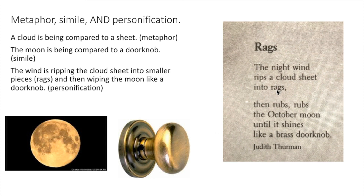Just like you might use a rag to wipe a doorknob to clean it and make it shine, the wind is moving the clouds across the moon, making it shine. So in this small poem, I hope you can see the idea of personification — how one object is given human characteristics of ripping and rubbing.